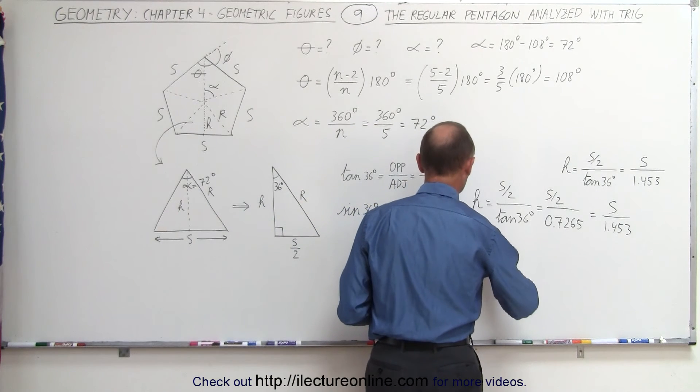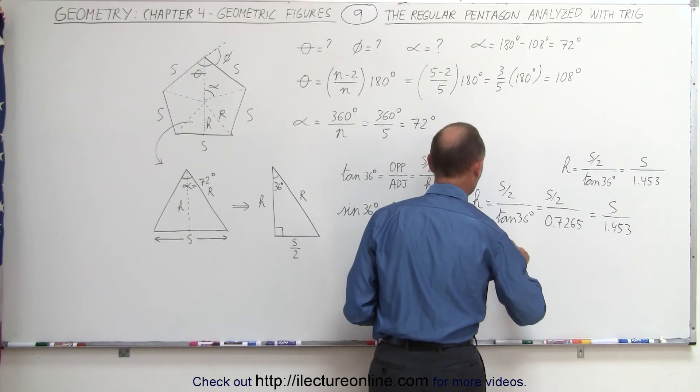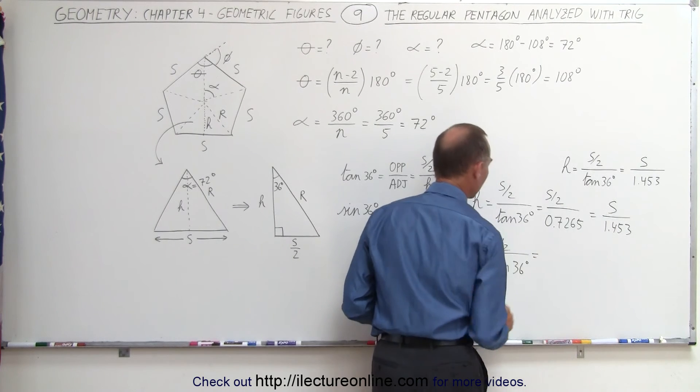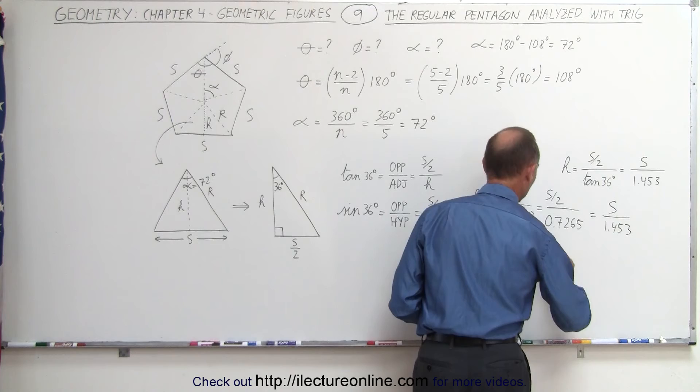Solving this for r, we can say that r is equal to s divided by 2 divided by the sine of 36 degrees, which is equal to s over 2 divided by...